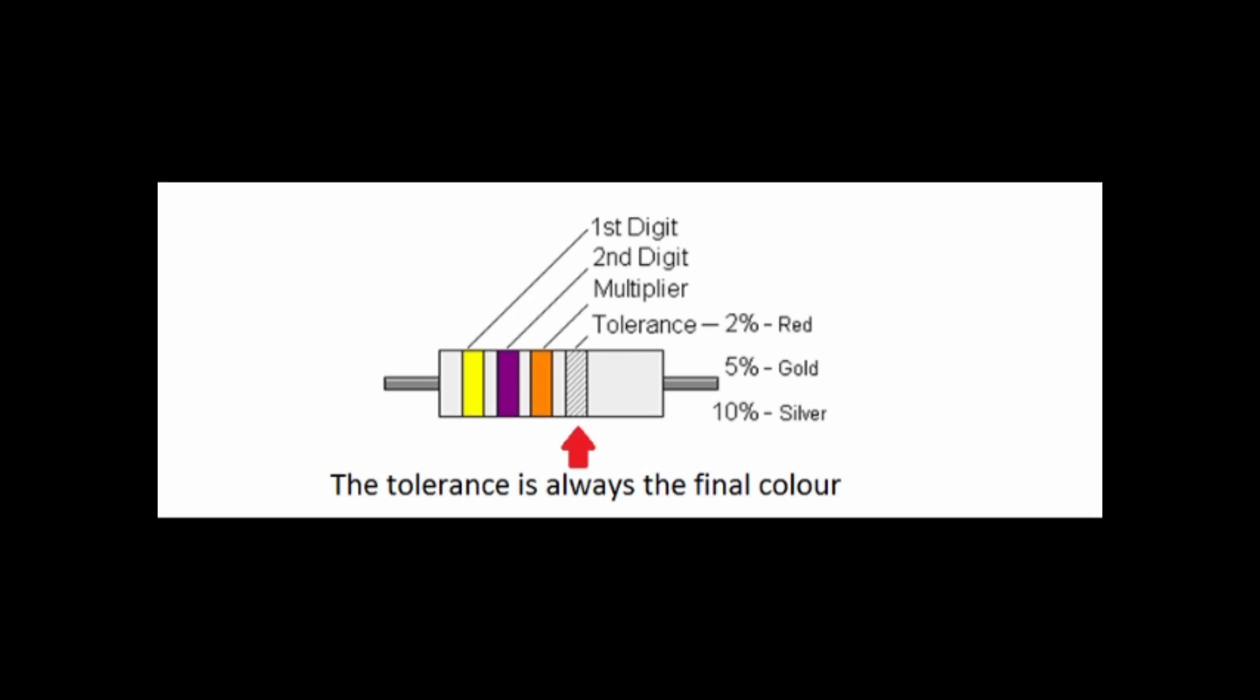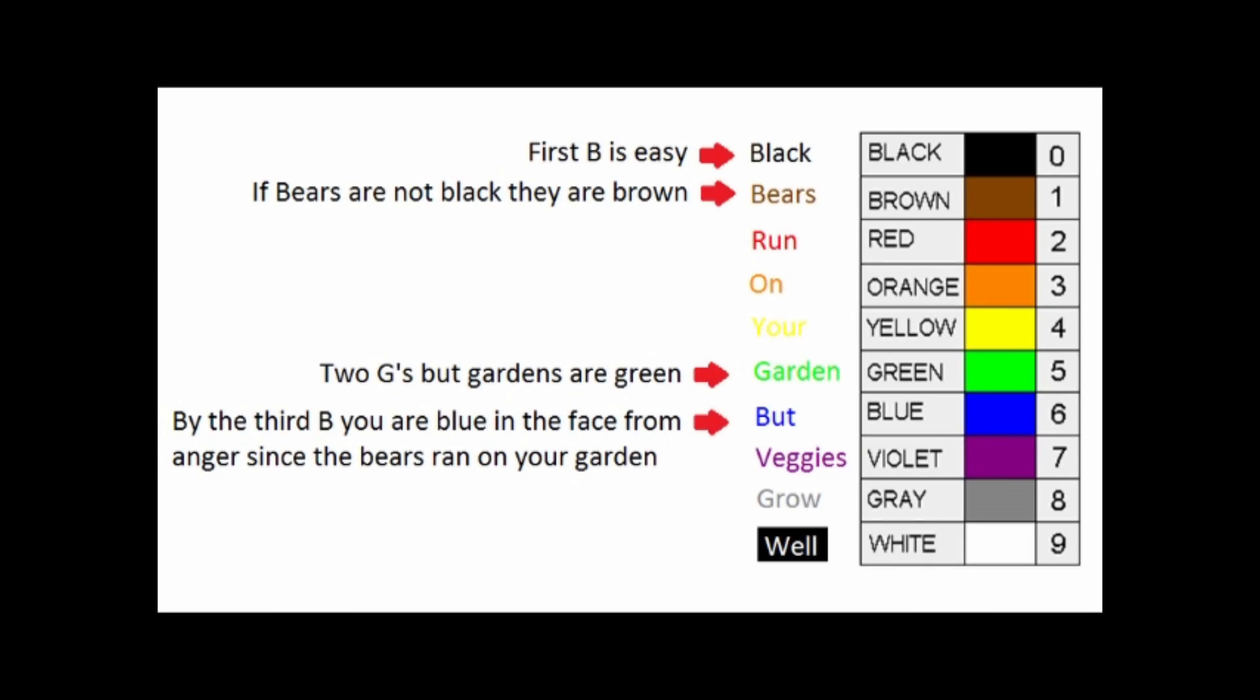A gold or silver band represents the tolerance. When reading a resistor this represents the final color. Therefore, if gold or silver is at the front your resistor is the wrong way around. Gold represents a tolerance of ±5% and silver represents a tolerance of ±10%. The other colors are determined by a chart.